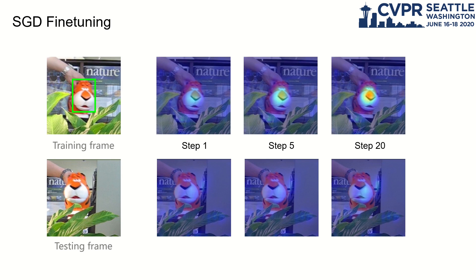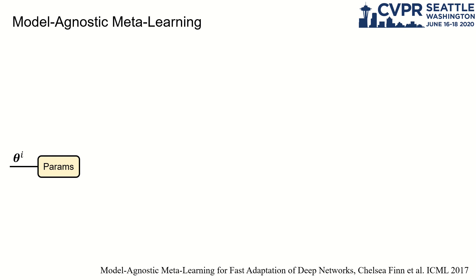The pre-training pipeline is quite simple. However, it cannot work well when fine-tuning. We can see that the detector gradually converges on the only training image, but it fails to detect anything in the testing one, which means that the SGD pre-training is not capable of robust generalization.